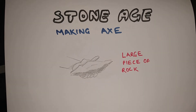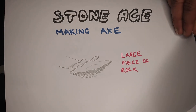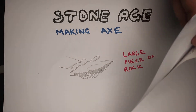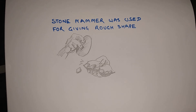Now you must be wondering how stones were given shape to make tools. Let us see how axes were made. In the first step, a large piece of rock was taken. After that, this piece was given a rough shape with the help of a hammer made of stone.